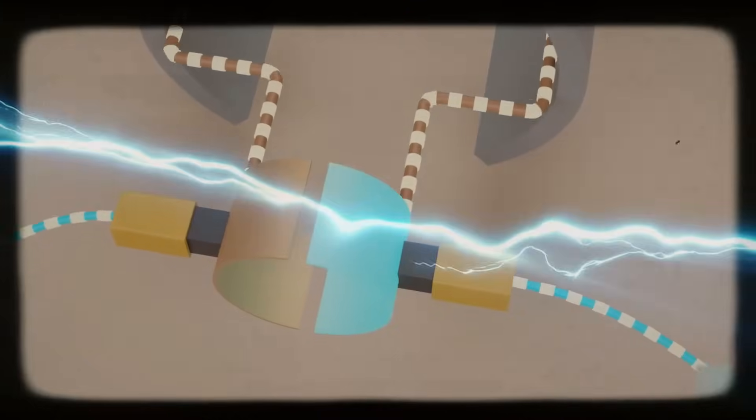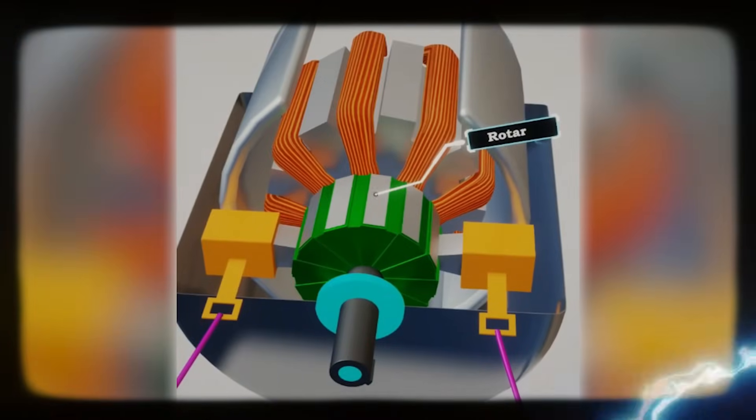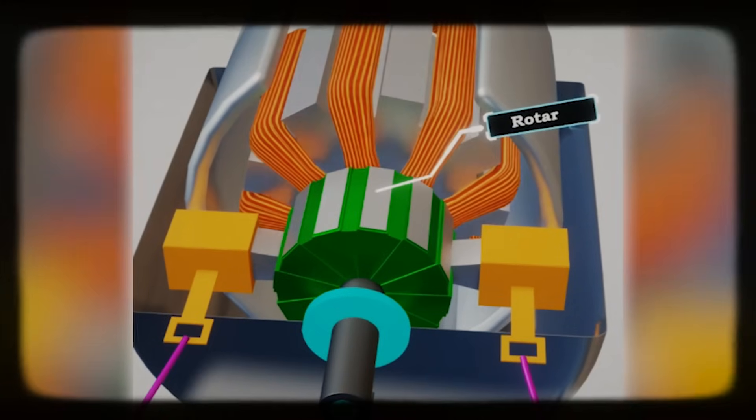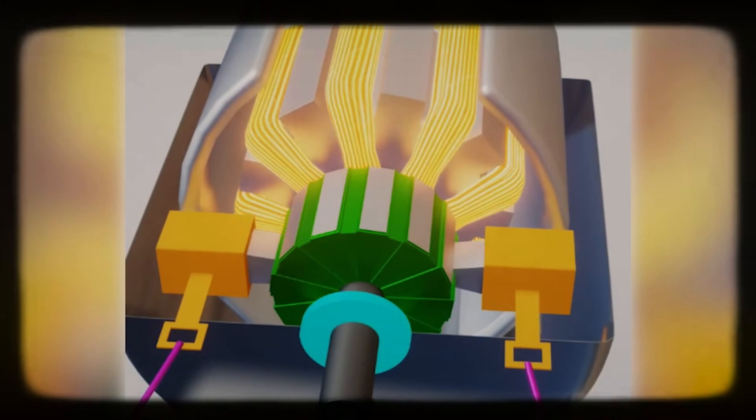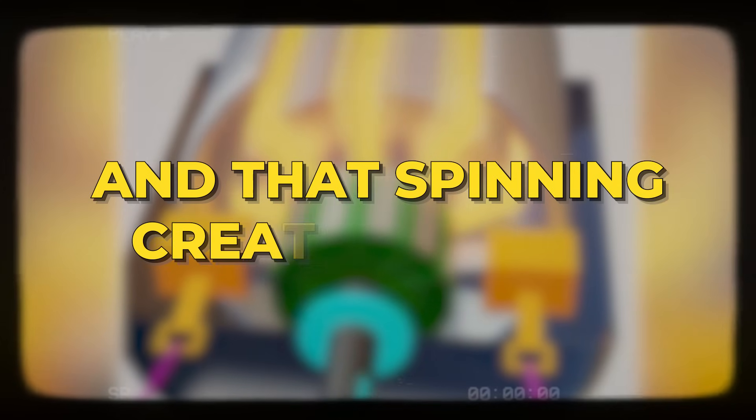Electricity flows through copper coils. That current creates a magnetic field. The magnetic field pulls against permanent magnets. The push and pull spin the rotor, and that spinning creates motion.